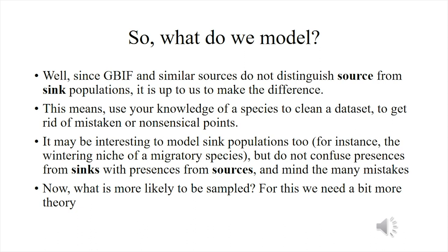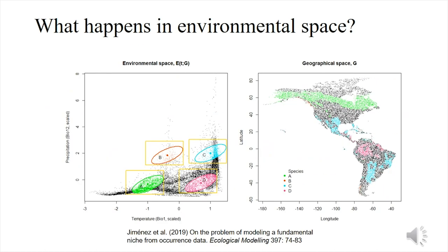Now, what is more likely to be sampled? For this we need a little bit more theory. We have been focusing on geographic space, but what happens in environmental space? It may well be the case that with the same niche breadth, same shape, and same size of niche, you are in different regions of environmental space. Therefore your samples will come with very different biases. As you can see in the graph, there are four ellipsoids called A, B, C, and D, each corresponding to a different region of the world and therefore to different regions in environmental space. You can see that you are sampling completely different sources of bias if you are in ellipsoid D versus ellipsoid C.